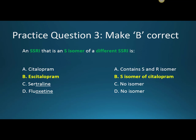Question three: an SSRI that is an S-isomer of a different SSRI is? The correct answer is B, Escitalopram. Escitalopram is the S-isomer of citalopram — similar to how omeprazole and esomeprazole are related. The 'S' stands for sinister, the more active biological form. It only takes 10 milligrams of escitalopram, which is roughly equivalent to 20 milligrams of citalopram. Citalopram is incorrect because it contains both the active S-isomer and the R-isomer. Sertraline and fluoxetine don't have any available products with different isomers.